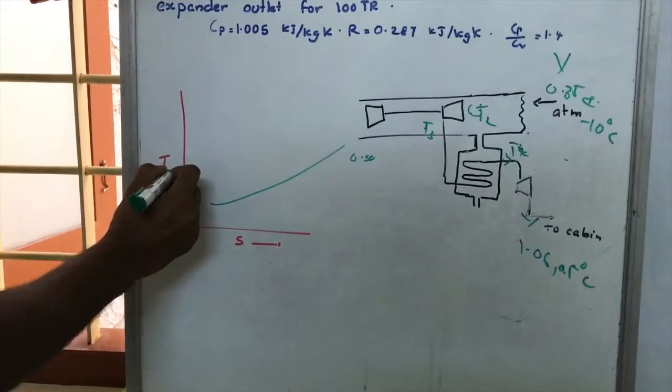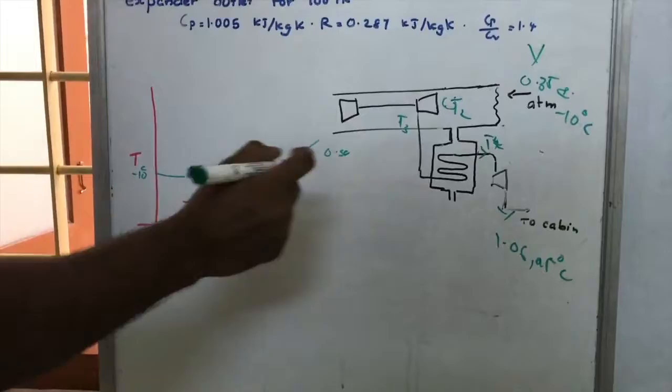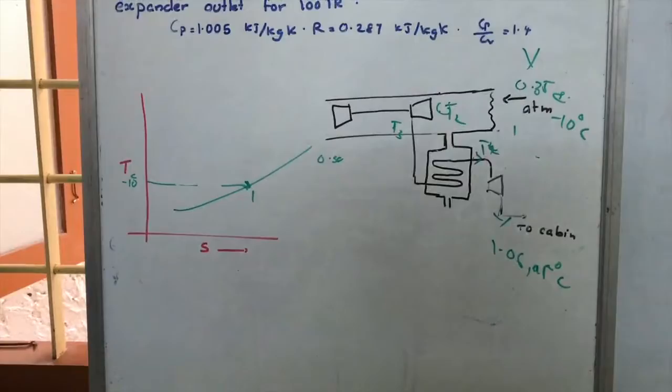The temperature is minus 10 degrees Celsius, so we select that point on the 0.35 bar pressure line. This gives us Point 1.